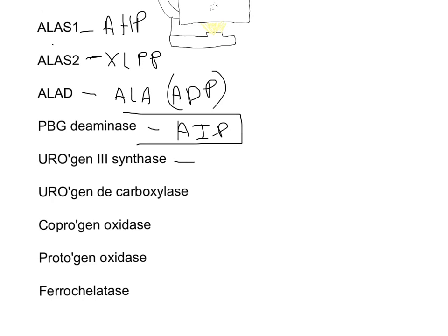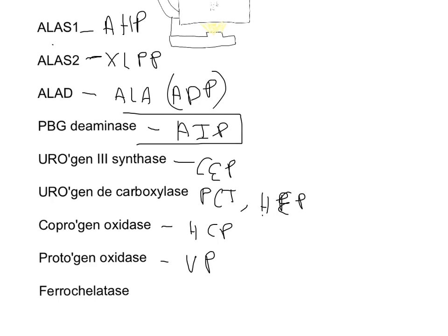Uroporphyrinogen III synthase is associated with congenital erythropoietic porphyria, or CEP. Uroporphyrinogen decarboxylase is associated with two things: porphyria cutanea tarda and hepatoerythropoietic porphyria, or HEP. Coproporphyrinogen oxidase is associated with hereditary coproporphyria, and protoporphyrinogen oxidase is associated with variegate porphyria, VP. Ferrochelatase is associated with erythropoietic protoporphyria, EPP.